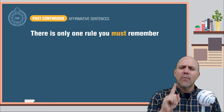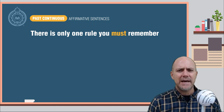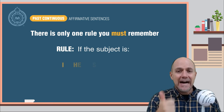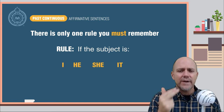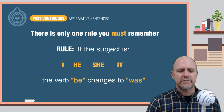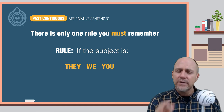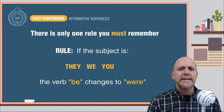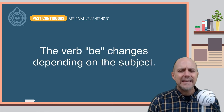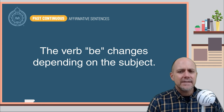There is only one rule you must remember when speaking in the past continuous. If the subject is I, he, she, or it, the verb be changes to was. If the subject is they, we, or you, the verb be changes to were. So just like in Spanish, the verb be changes depending on the subject.